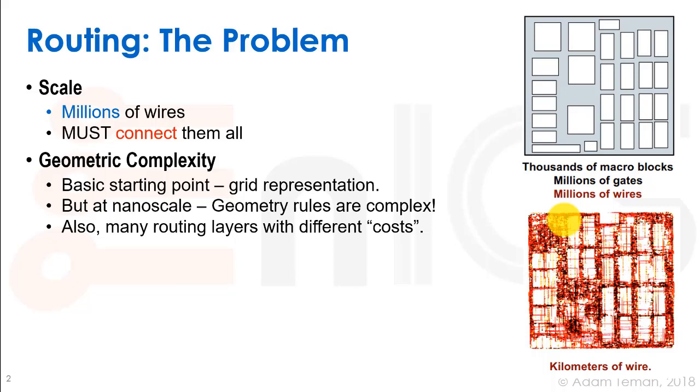The geometric complexity of this problem is huge. For a basic starting point we'll take a grid representation, we'll decide that our chip is divided into these very fine grids. But at nanoscale the geometry rules are very complex. There are different routing layers as well and the different routing layers have different costs, so we may want to route at a certain layer with certain rules, at another layer with other rules. We may have some advantage to route in one layer than another.